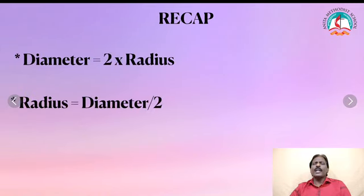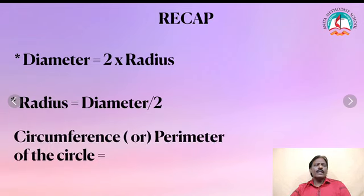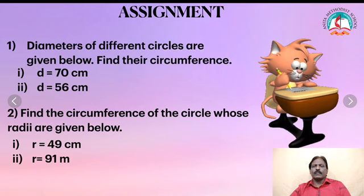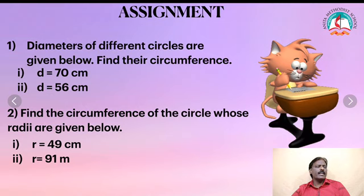Now, recall what you learned about this topic. Diameter is equal to 2 into radius. Radius is equal to diameter divided by 2. The circumference or perimeter of the circle: C is equal to 2πr units. Assignment: all must do assignment in your classwork book. Diameters of different circles are given - find the circumference: (1) D equals 70cm, (2) D equals 56cm. Also find the circumference of circles whose radii are given: (1) R equals 49cm, (2) R equals 91 meters.